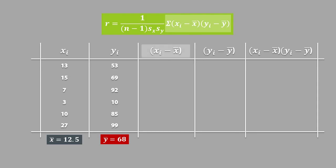Then, we will subtract each x value from x bar, so we will have 13 minus 12.5, which is equal to 0.5. For the second row, we will have 15 minus 12.5, which is equal to 2.5. We will do this for each x value.